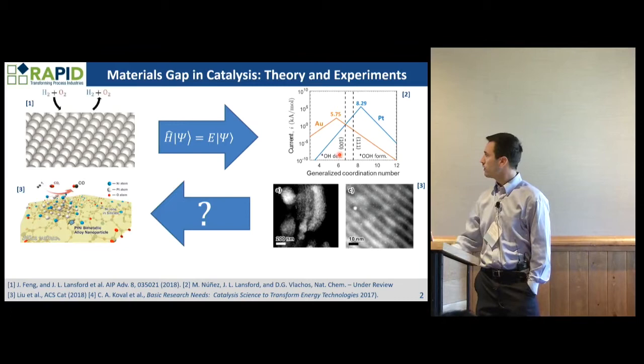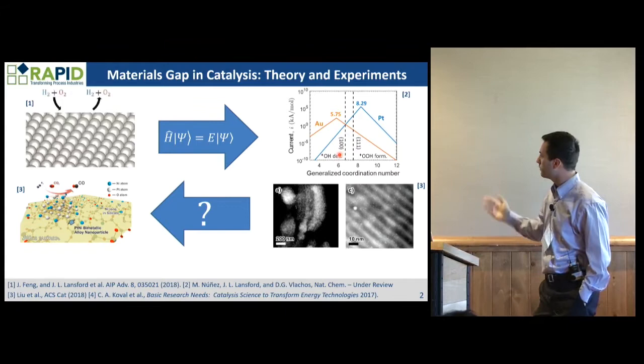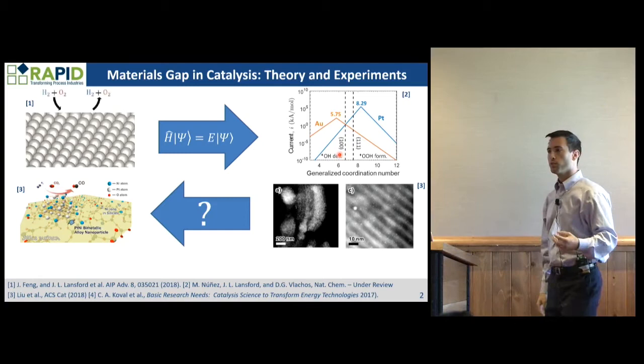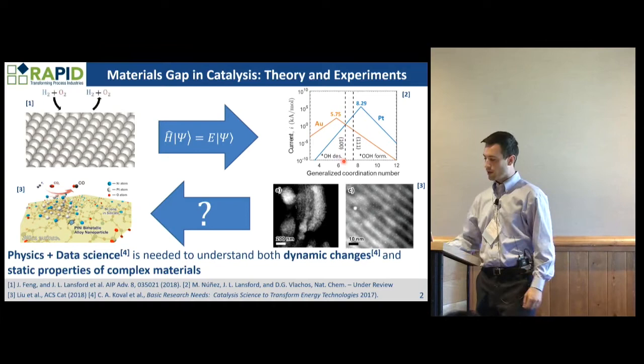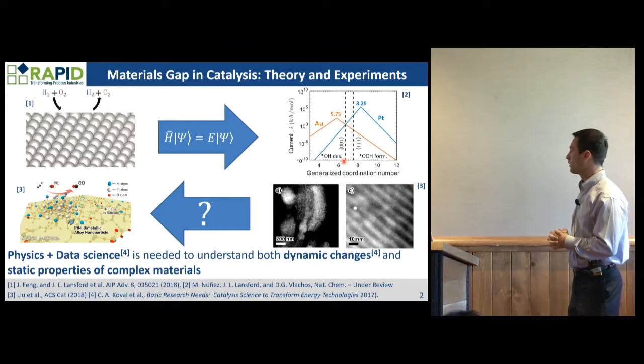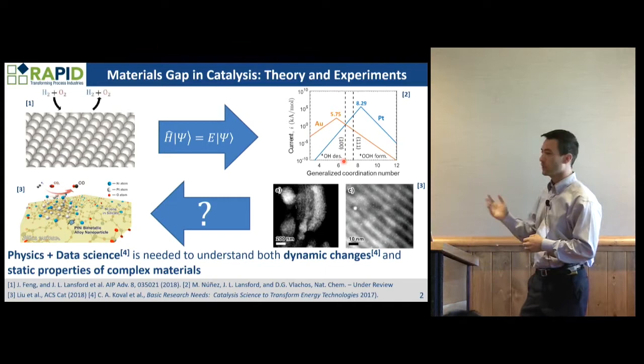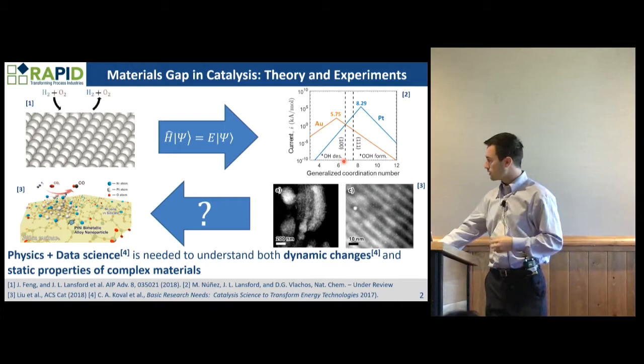So then the question is: how do we, from experimental data that we have, infer from that what the actual structure looks like so that we can begin to perform quantum calculations and do predictions? To do this, we're going to need both physics and data science. This is one of the priority research directions issued by the Department of Energy, which determines our funding — combining these two techniques to understand dynamic changes, how catalysts change under temperatures and pressures, as well as the static properties for complex materials.